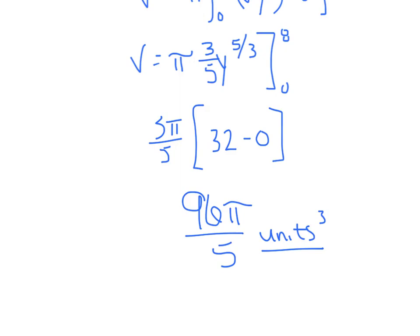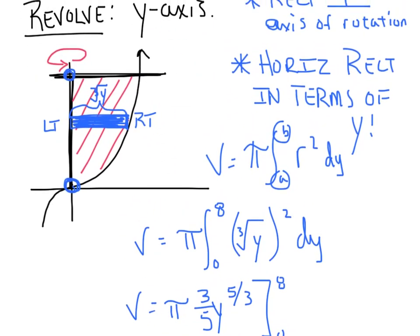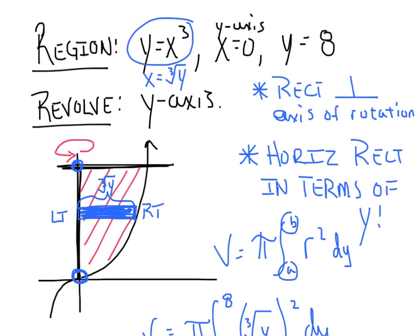So that was our last problem for tonight. I just want to emphasize a couple of key things, and let's revisit them before we depart. Your rectangle has to be perpendicular to the axis of rotation. And if it's a horizontal rectangle, everything has to be in terms of, you guessed it, y. So things get a little crazier, but it's not bad still. All right. Good luck tomorrow, and we'll see you.